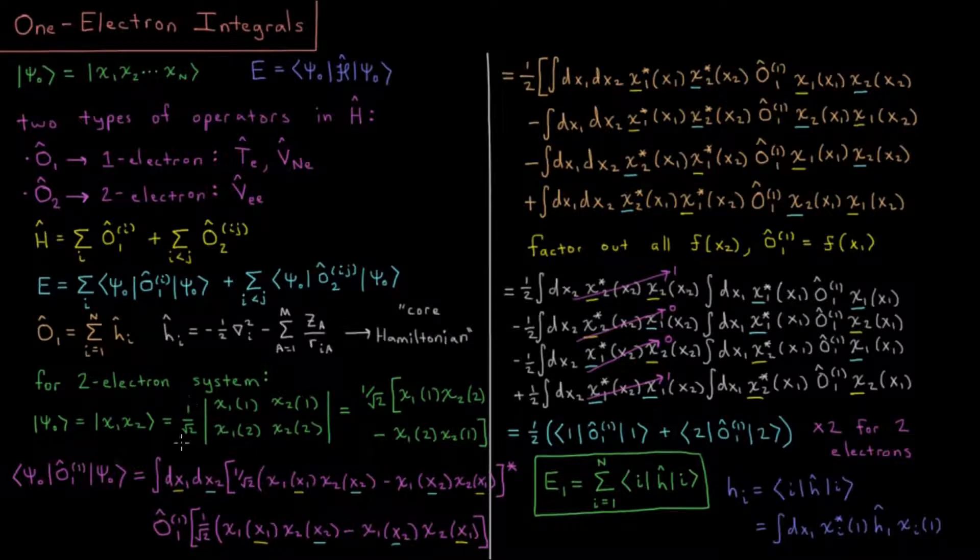That Slater determinant is 1 over square root of 2, this determinant, where the columns are spin orbitals and the rows are electrons. So that gives us 1 over square root of 2, χ₁(1) χ₂(2) minus χ₁(2) χ₂(1).